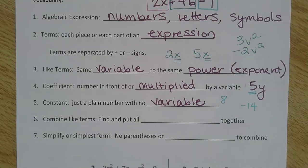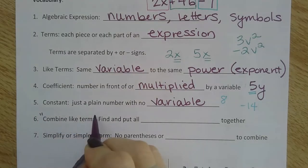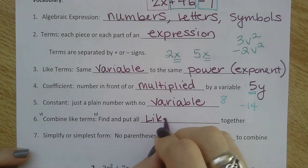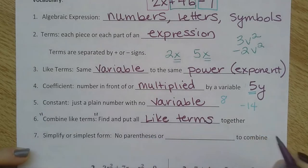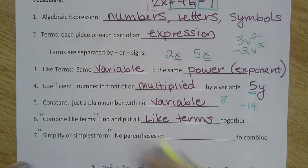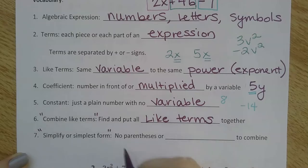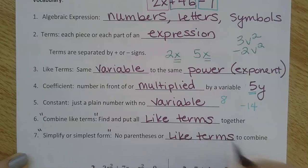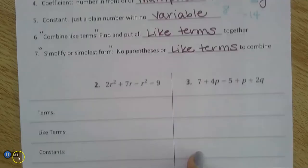To combine like terms - you're going to see this as directions a lot. Find and put all the like terms together. Some directions might say simplify or write it in simplest form. That means you've gotten rid of all the parentheses and there's no more like terms to combine. This will all make more sense as we go through some examples.